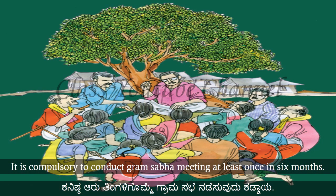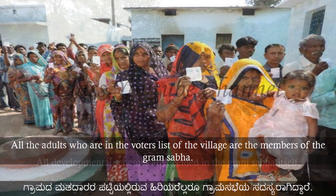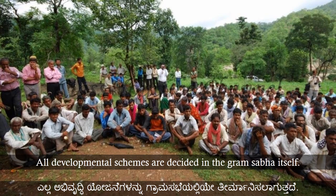The Gram Sabha is an important body of a Gram Panchayat. It is compulsory to conduct Gram Sabha meetings at least once in six months. All the adults who are in the voters list of the village are the members of the Gram Sabha. All developmental schemes are decided in the Gram Sabha itself.